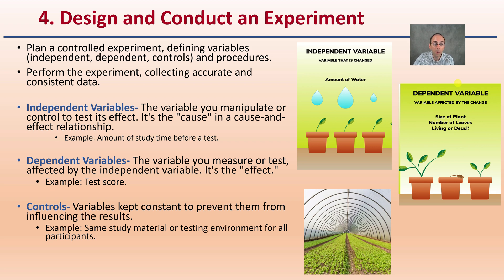Now I mentioned those independent and dependent variables. Independent variable, the one that you, the scientist, will manipulate or control to test the effect of. This is the cause, or the cause and effect relationship. The amount of time before a test, for example, would be an independent variable. The dependent variable would be a variable you measure or test affected by the independent variable. So this is essentially the test score.